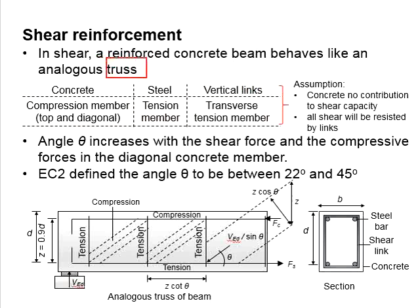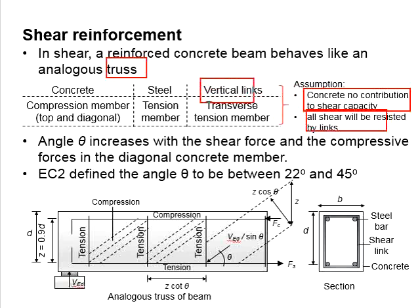The truss here assumes that the concrete has no contribution to the shear capacity, and all the shear will be resisted by the shear link.